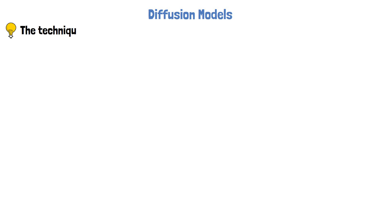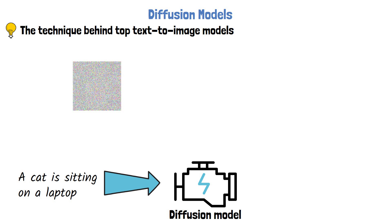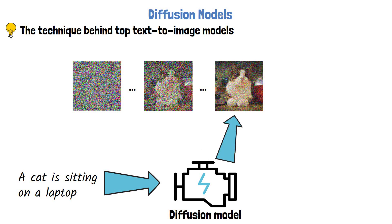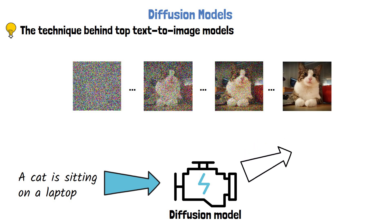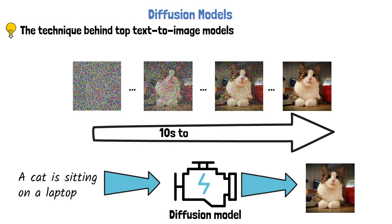Let's start with Diffusion Models. A Diffusion Model is the backbone architecture behind the top text-to-image generation models. Diffusion Models get a prompt as input, such as a cat sitting on a laptop. The model learns to gradually remove noise from an image in order to generate a clear image. The model starts with a random noise image on the left, and in each step it removes some noise — conditioned on the input prompt — so we end with an image that matches the prompt. Finally we get a clear image of a cat as the final output. The noise removal process usually takes between tens to thousands of steps, so it comes with a latency drawback.